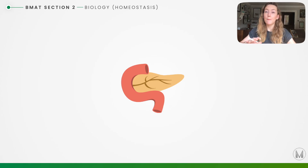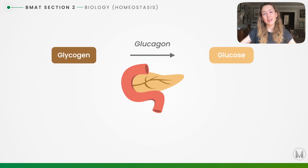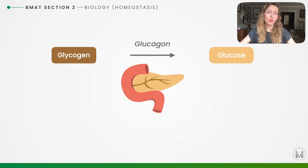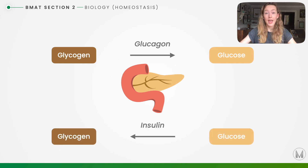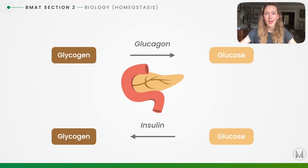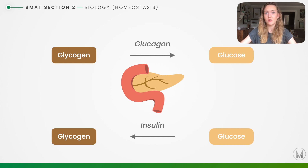The pancreas controls blood glucose levels using two hormones: insulin and glucagon. Glucagon is a hormone that increases blood sugar levels by converting stored glycogen into glucose, and is important during starvation or exercise. Insulin is a hormone that reduces blood sugar levels by converting excess glucose into glycogen to be stored — important after eating a meal when there's a large rush of glucose into the blood.